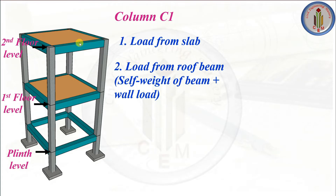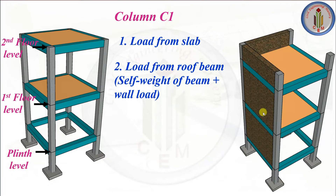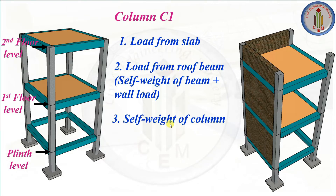Second, we need to calculate the load from the roof beam. The roof beam will carry the load of its self-weight plus the self-weight of the wall. You can see the plinth beam with a wall on it, and the roof beam will also have a wall on it. Since we have calculated the slab load directly to the column, we only need to consider the load from the wall and self-weight of the beam. Third, we need to calculate the self-weight of the column.